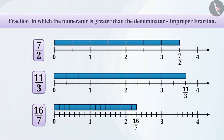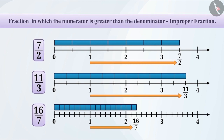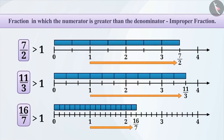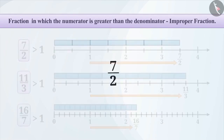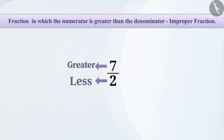As you can see, each fraction is lying on the right side of 1, and therefore it is greater than 1. We can say that whenever the numerator is greater than the denominator, the value of the fraction is greater than 1. Such a fraction is called an improper fraction.